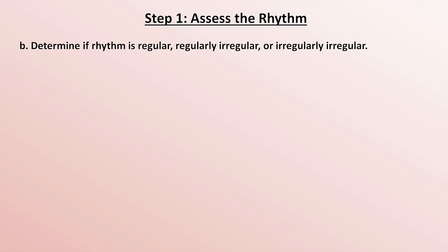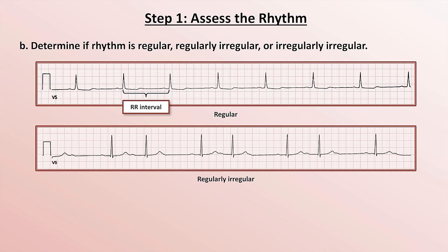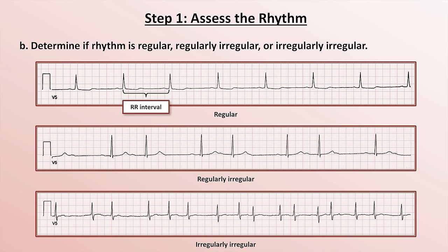Next, determine if the rhythm is regular, regularly irregular, or irregularly irregular. A regular rhythm is one in which the RR interval is consistent from one beat to the next. In a regularly irregular rhythm, the RR interval varies but does so in a repeating pattern. In an irregularly irregular rhythm, there is no pattern — QRS complexes seem to come at random and unpredictable intervals.